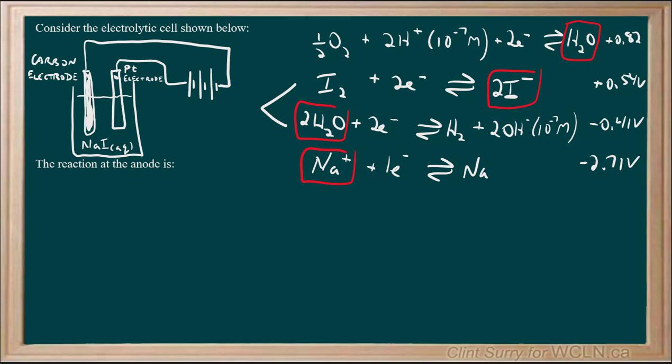Therefore, on the top here, this is our oxidation reaction, this is our reduction reaction, and since we want the anode, we're looking at the oxidation reaction, and the reaction we'd be looking at is 2I minus going to form I2 plus 2 electrons.